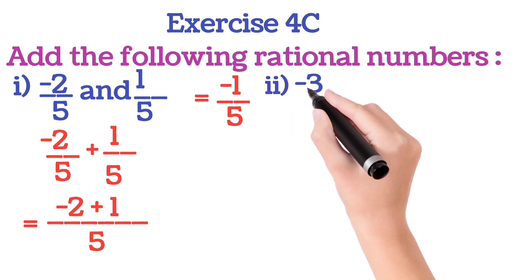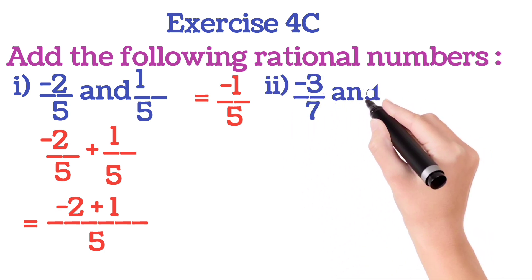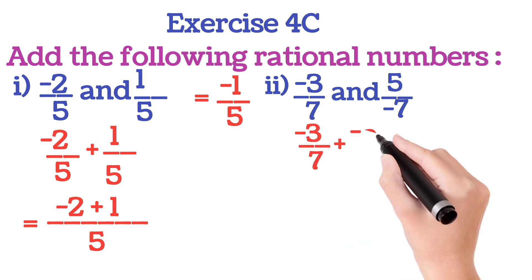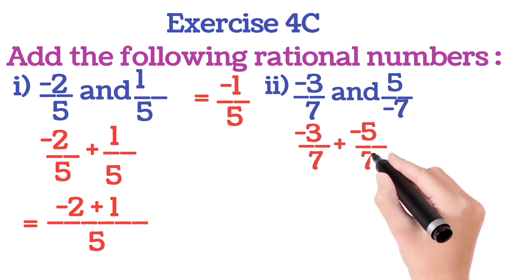Next sum you will add minus 3 by 7 and 5 by minus 7. But in rational number we can't keep the denominator negative. So we will multiply numerator and denominator with minus 1. So what we will get: minus 3 by 7 plus 5 into minus 1, minus 7 into minus 1, minus minus plus 7.